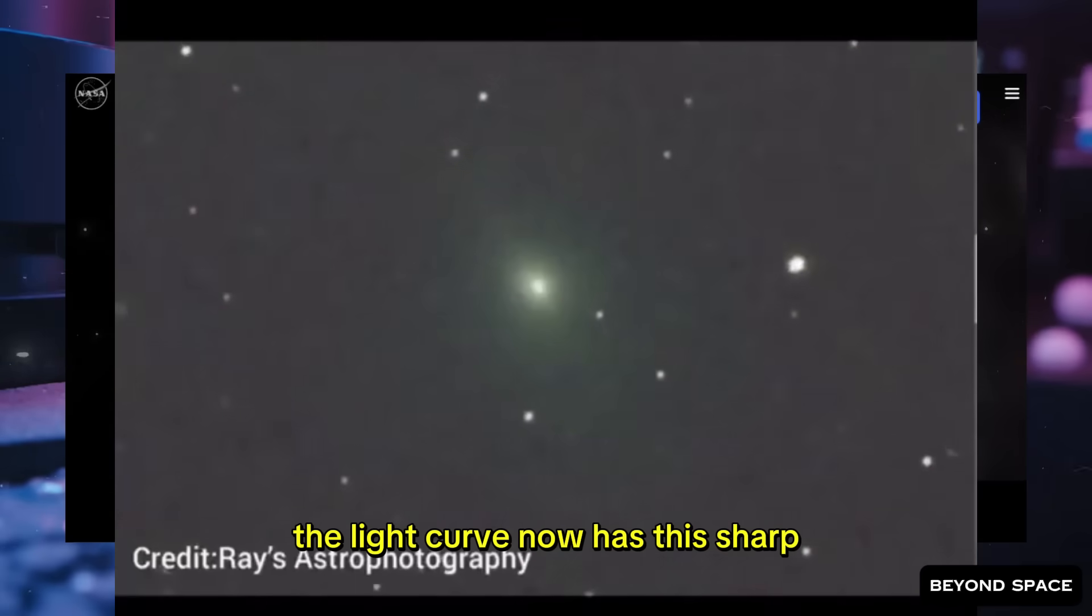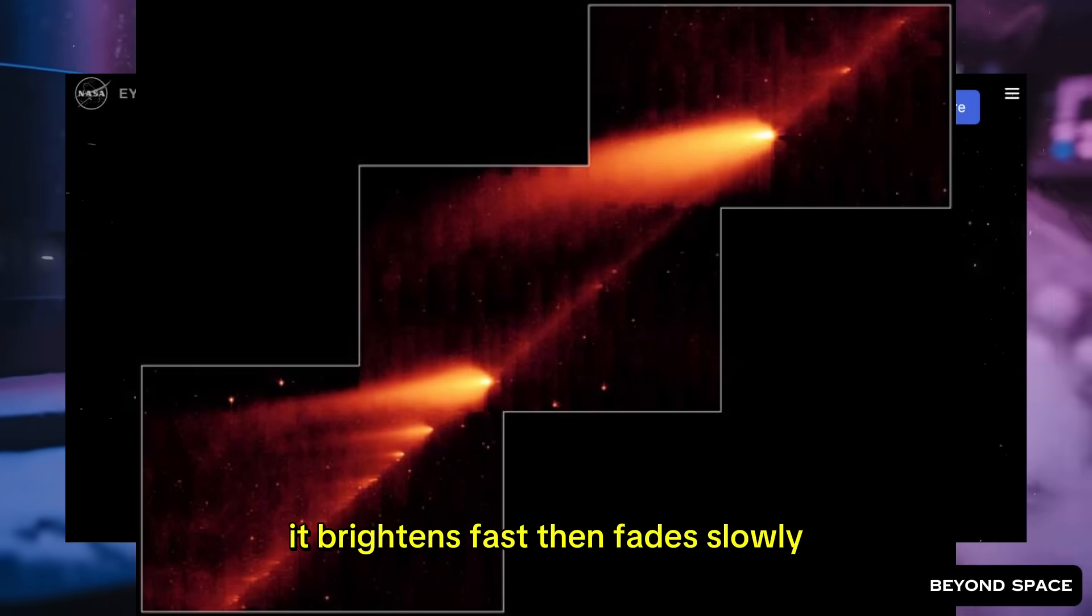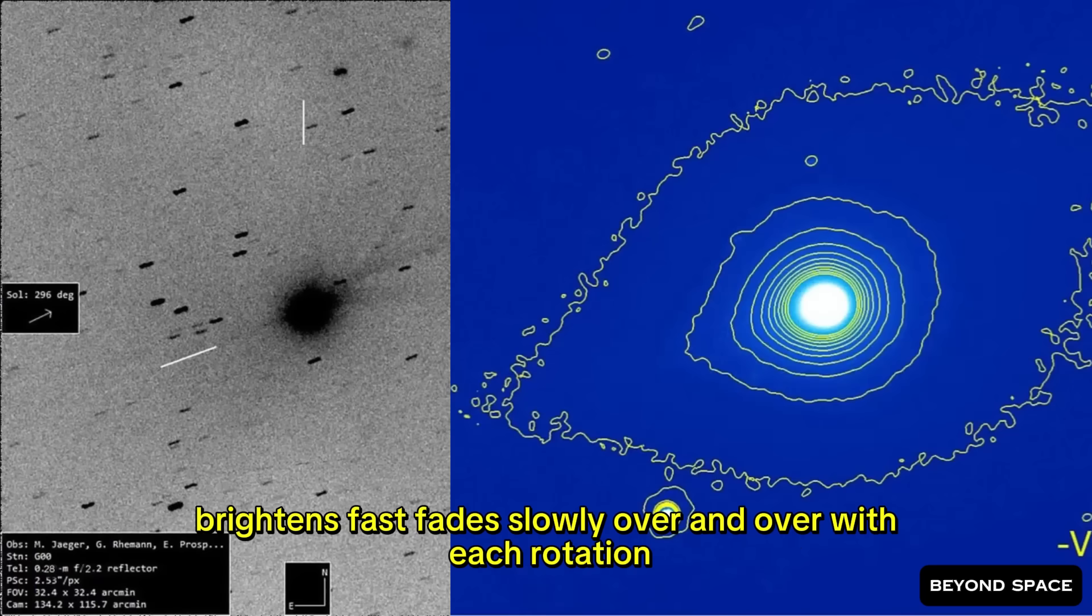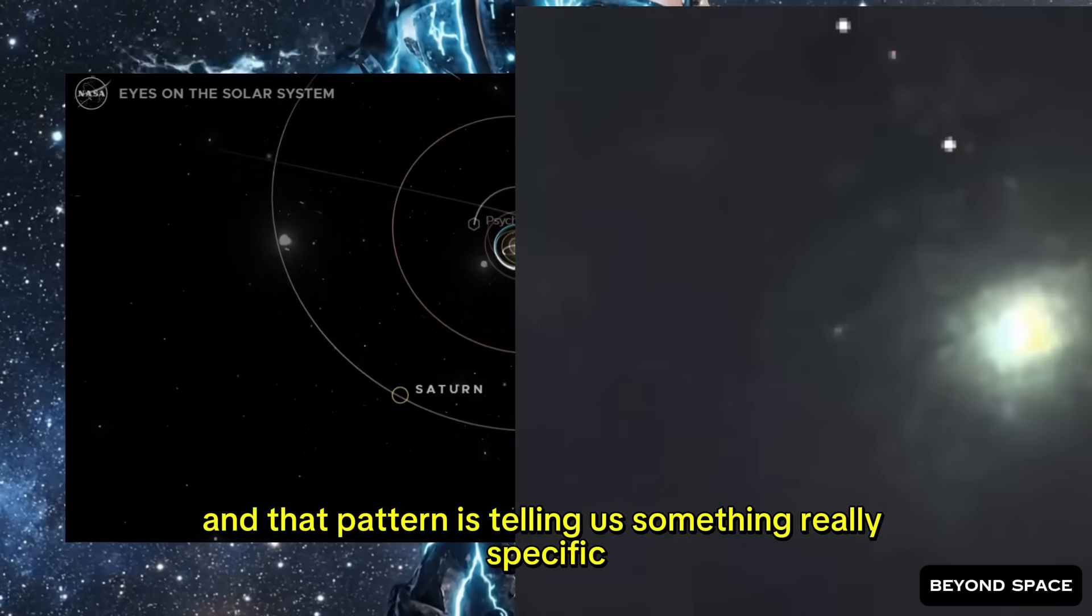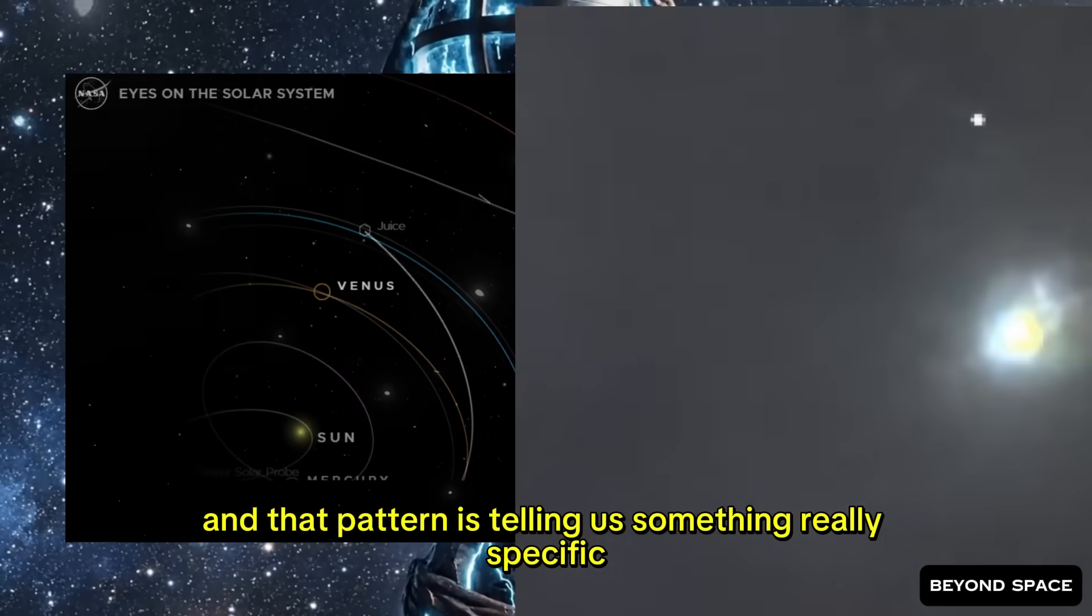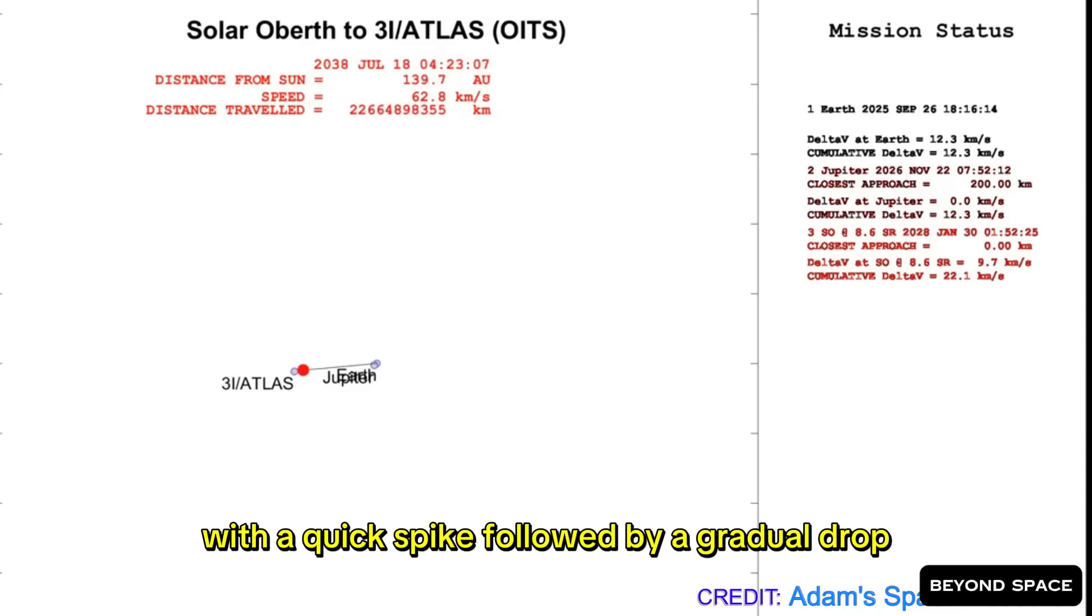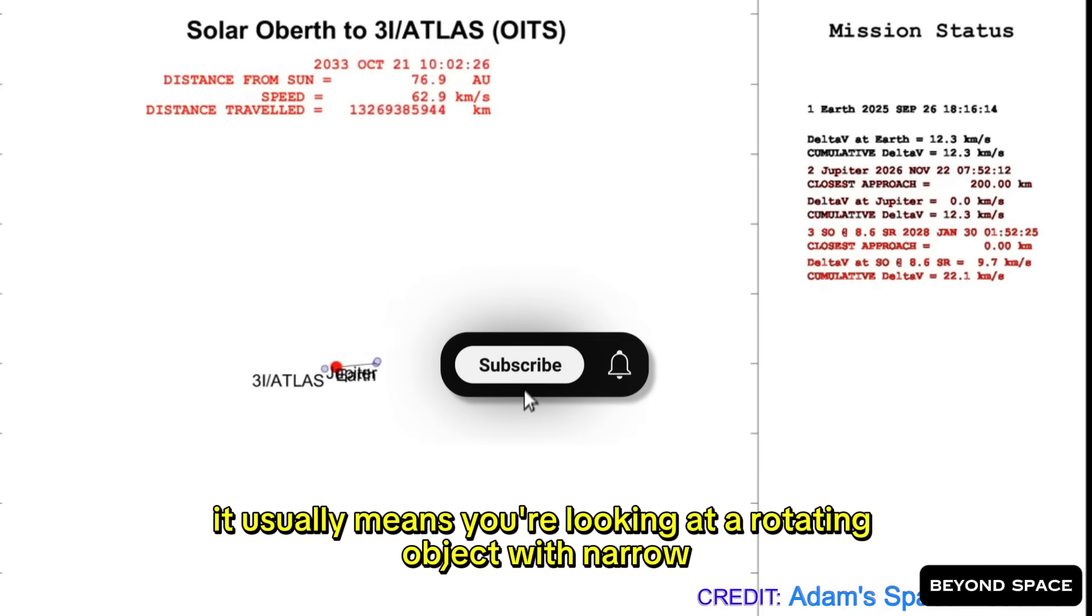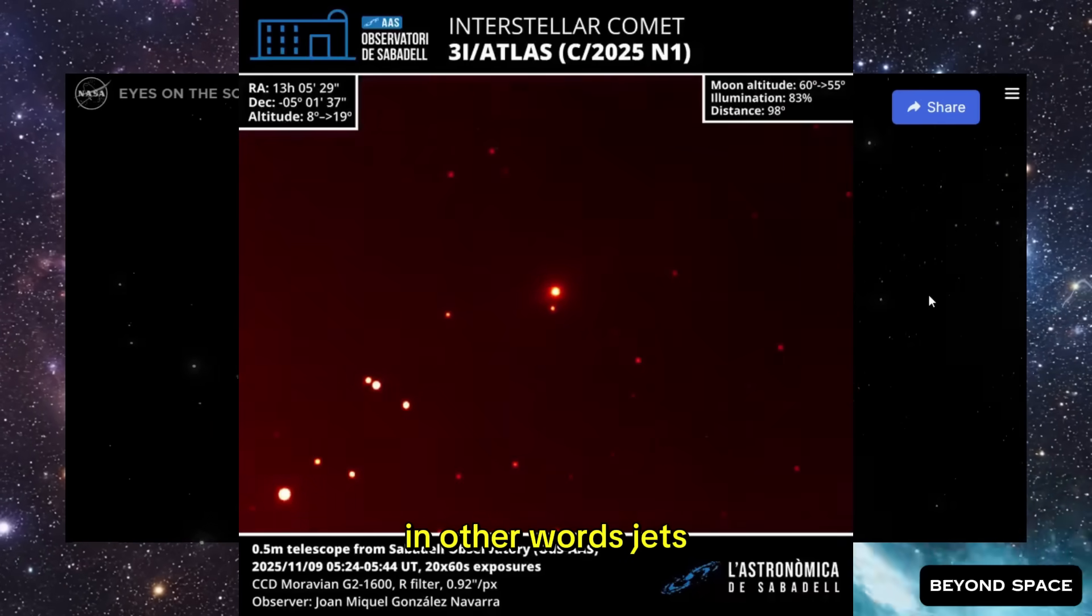But today's data shows something completely different. The light curve now has this sharp, almost heartbeat-like pattern. It brightens fast, then fades slowly. Brightens fast, fades slowly, over and over with each rotation. And that pattern is telling us something really specific. When you see a light curve that looks like that, with a quick spike followed by a gradual drop, it usually means you're looking at a rotating object with narrow, concentrated, active regions. In other words, jets.